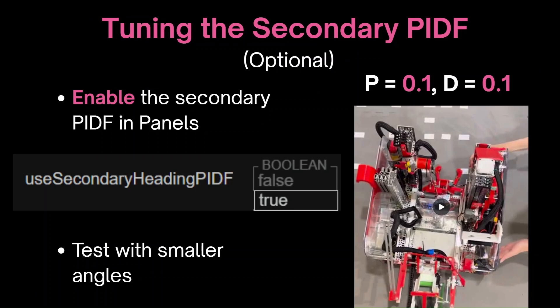If you followed these steps and don't have a secondary PIDF enabled, then you're finished with tuning the heading PIDF and can move on to tuning the drive. However, if you do have the secondary one enabled, then first double check that in panels the boolean to use it is set to true. Otherwise, the robot's movements won't reflect the changes you make.